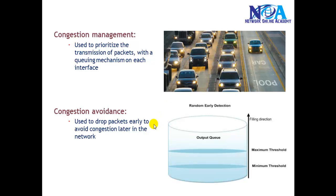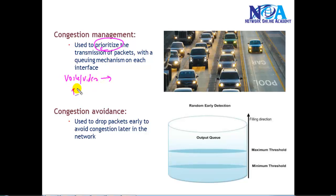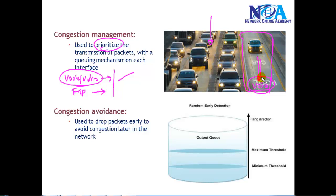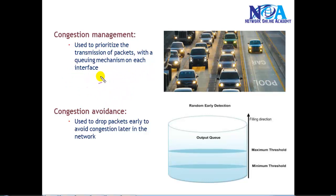The next mechanism is congestion management. Here we can define a priority for specific traffic. If voice, video, and FTP traffic are all arriving and there is major congestion, we want to ensure that voice and video traffic is always sent first before FTP traffic. We can arrange them in separate queues to ensure voice and video always get high priority and have very little chance of being dropped. We have different queuing mechanisms such as class-based weighted fair queuing and low latency queuing — we'll cover those in more detail later.